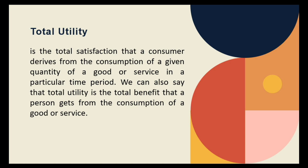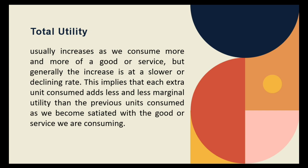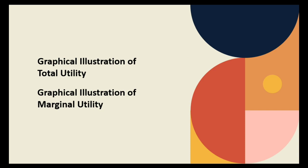Total utility depends on the quantity of a good consumed — more consumption generally gives more total utility. Our total utility usually increases as we consume more and more of a good or service, but generally the increase is at a slower or declining rate. Each extra unit consumed adds less and less marginal utility than the previous units as we become satiated. Now here's a video presentation by Khan Academy for the graphical illustration of total utility and marginal utility.